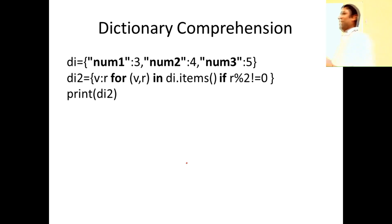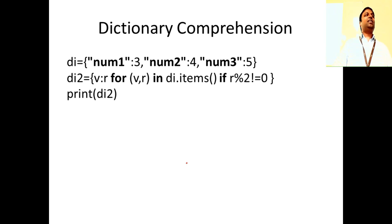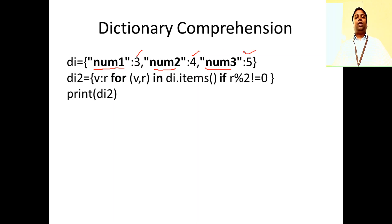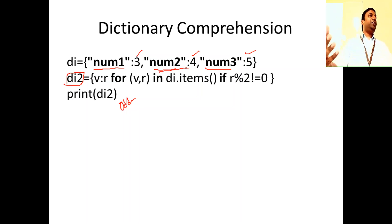Now we will move to dictionary comprehension. In dictionaries we have a comprehension too. List comprehension lets you create a list in one line of code — likewise you can create dictionaries using dictionary comprehension. For example, I have a dictionary where key is num1 with value 3, num2 with value 4, num3 with value 5. I want to create another dictionary using comprehension that contains only odd numbers — so d2 should contain num1:3 and num3:5, skipping num2:4.